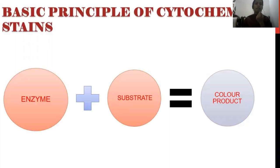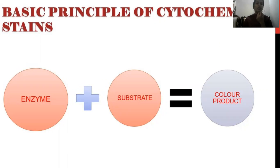The basic principle of cytochemistry is that enzymes present in hematopoietic cells react with the substrate component present in the reagent, and the end product is a colored compound. By visualizing this colored product microscopically, we can diagnose the type of hematopoietic cell — whether it is myeloid or lymphoid.